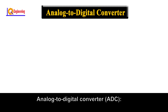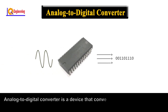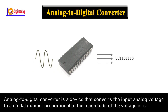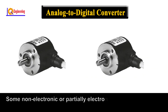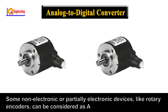Analog to Digital Converter (ADC): An Analog to Digital Converter is a device that converts the input analog voltage to a digital number proportional to the magnitude of the voltage or current. Some non-electronic or partially electronic devices, like rotary encoders, can also be considered as ADCs.